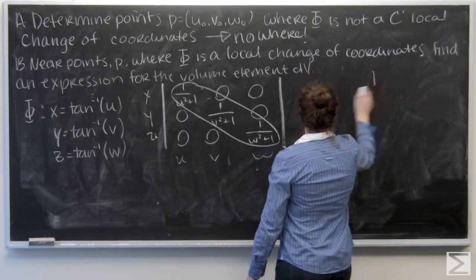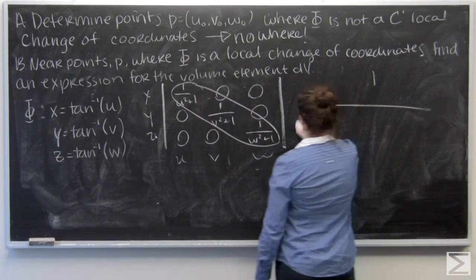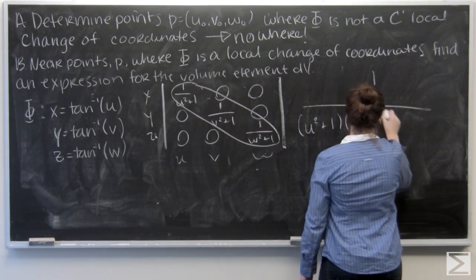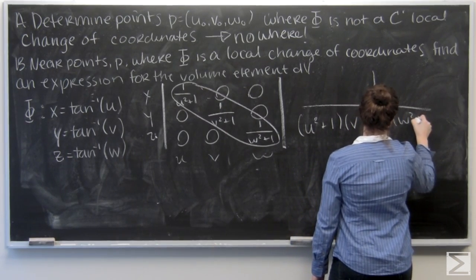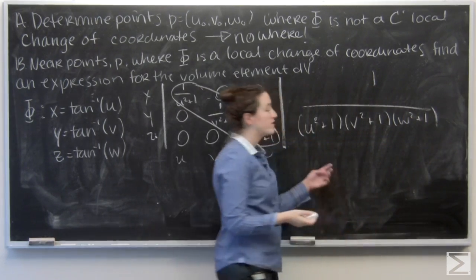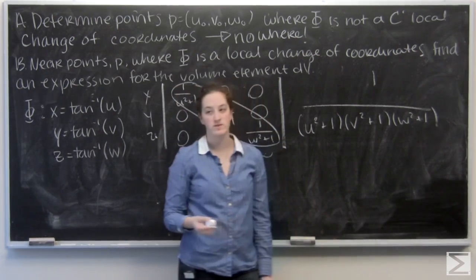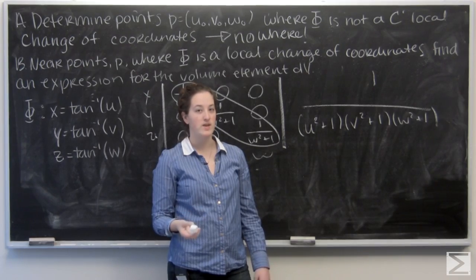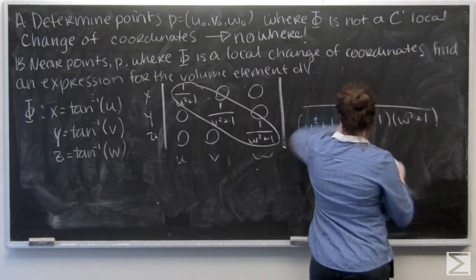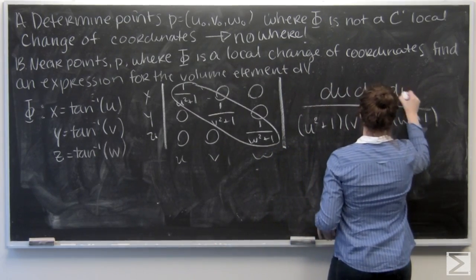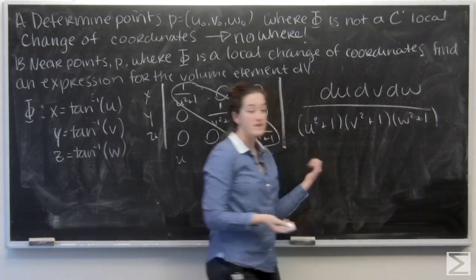So I'm going to have 1 over u squared plus 1 times v squared plus 1 times w squared plus 1. And now I just need to multiply by du, dv, and dw. And that's my answer.